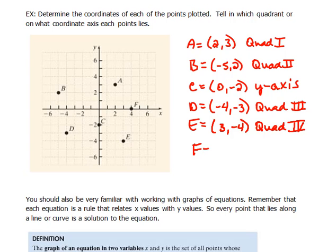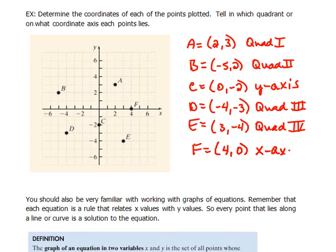For F, we would go 4 in the x direction and nothing in the y direction — so that would be the point (4, 0), and it lies on the x-axis.